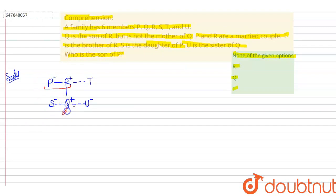So in this you can see P and R are married couple. And Q is their child. So Q will become son of P. So option number C, Q is the right answer.